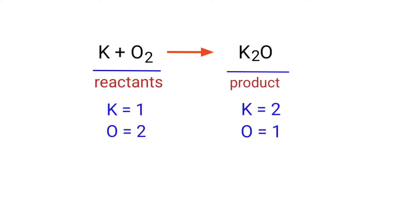In this equation we need to balance the oxygen atoms first. To do this we need to put a coefficient of two in front of K2O. The oxygen atoms are balanced.